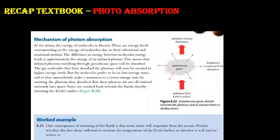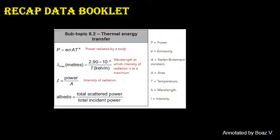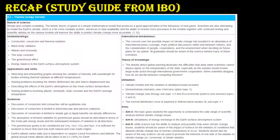The mechanism can be read in the textbook. To summarize, there are four key equations from the data booklet covered in this chapter: the conduction equation, Stefan-Boltzmann law, Wien's Displacement Law, and the solar constant equation — all annotated for reference.